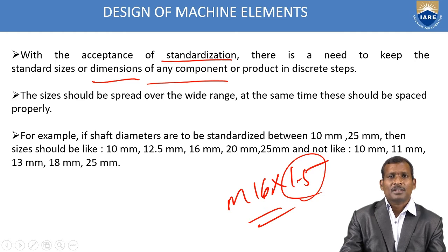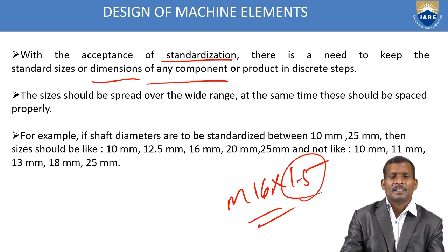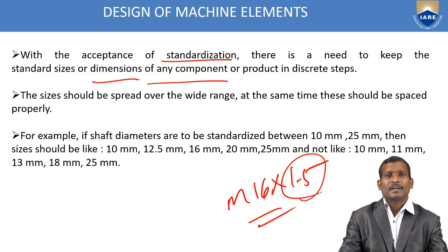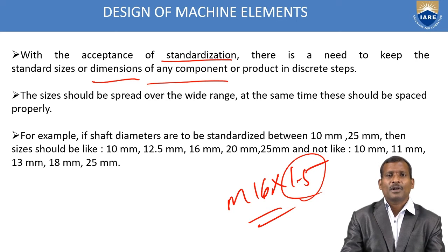Many examples include washers, ball bearings, and roller bearings — these all come under standard sizes. After acceptance of standardization, we should compulsorily keep the standard sizes for design in our product. When you are designing any product, you should use standard size standard parts.